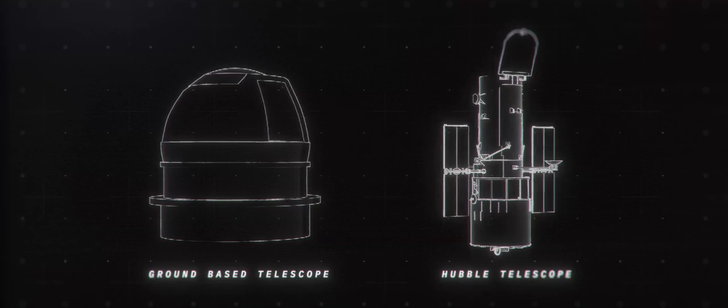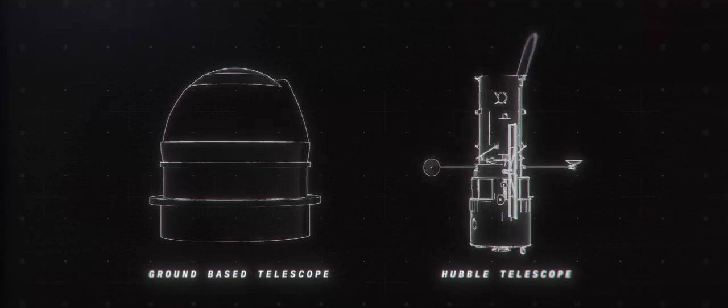Since Voyager, ground-based telescopes and the Hubble Space Telescope have played the leading role in our understanding of Uranus.